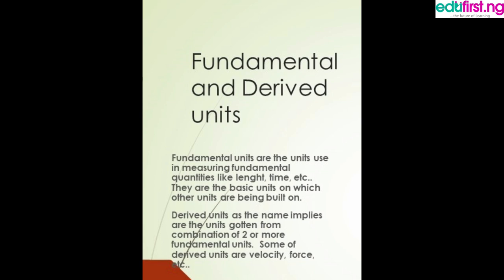For example, acceleration is not a fundamental unit — it is a derived unit. We get it from combining two or more fundamental units or fundamental quantities. For example, acceleration is meter per second squared. We get it from those. Now, we have some basic well-known fundamental units.